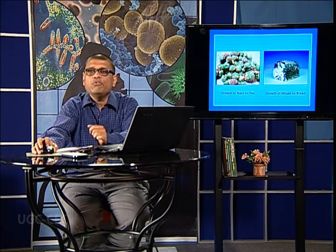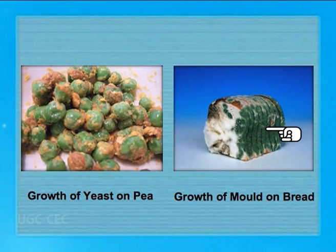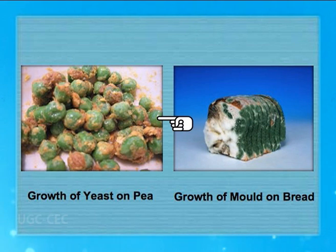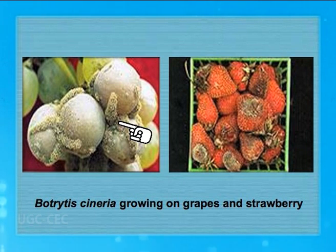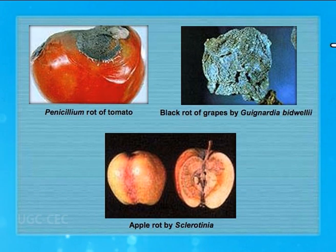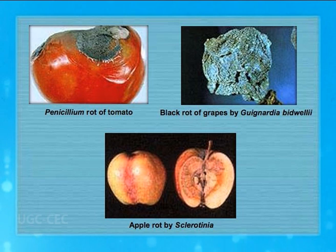We come to the most important aspect of food spoilage. Different fungi and bacteria can bring about spoilage of food. On common bread, green colonies of mold — mostly Aspergillus and Penicillium — can spoil the bread and produce toxins. When peas are stored and yeast grows on them, a brown slimy growth results in destruction of the peas. Botrytis cinerea, a fungus, sporulates and grows on grapes and strawberries causing their destruction. There is also Penicillium rot — an opportunistic pathogen spoiling tomatoes — and Guignardia bidwellii causing black rot of grape, and Sclerotinia rot of apple. All these diseases can destroy food material including fruits, reducing their shelf life.